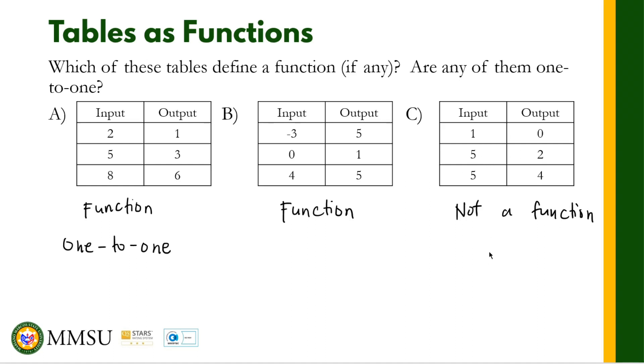So basically, what we do to determine if a given relation in a table is a function or not, we just look at the input. If there is a repetition in the input value, that means it is not a function. And that's how you determine if a given table is a function or not a function.